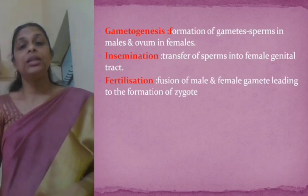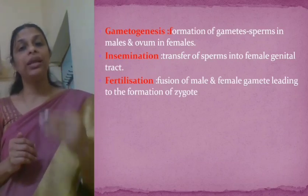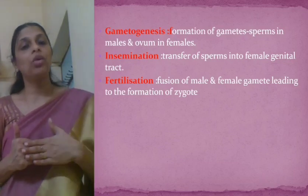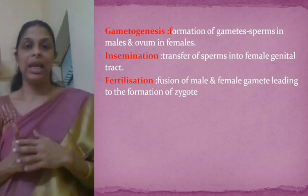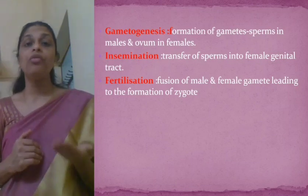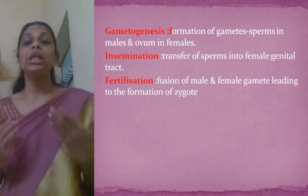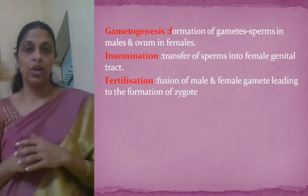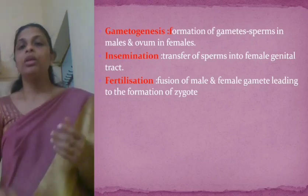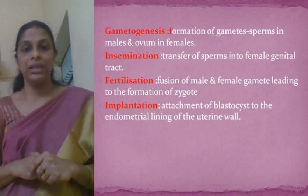After insemination, the sperms are inside the female genital tract and fusion takes place — that is called fertilization. Fertilization is the fusion of the male and female gamete, which leads to the formation of a zygote.